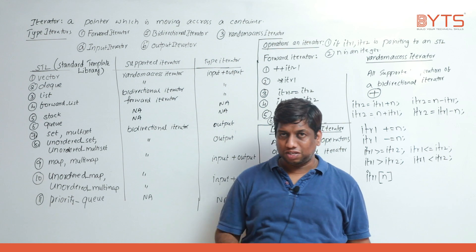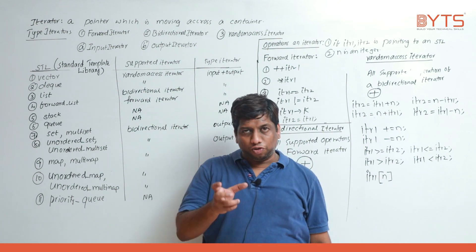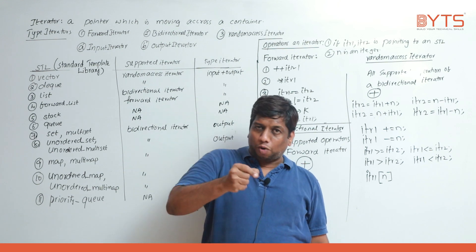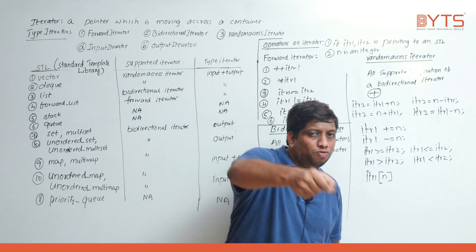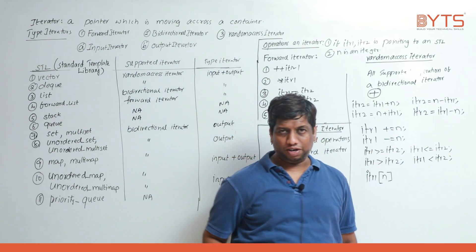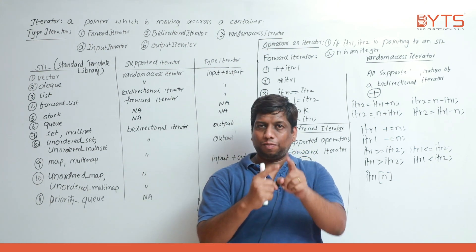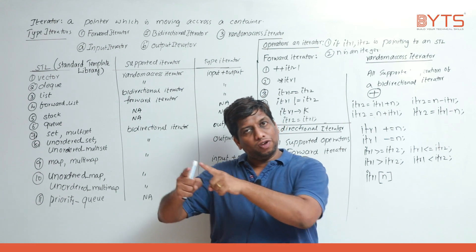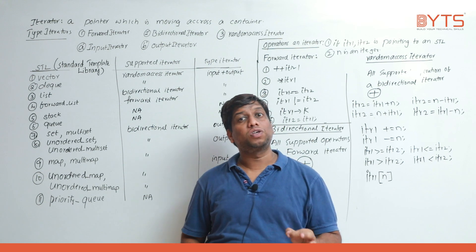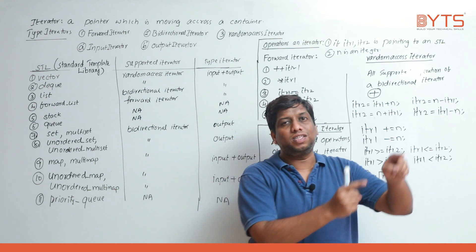Whenever we want to traverse across all elements in a container, we use an iterator. For example, in an array of 20 elements, if we want to insert a new element at the 15th position, the iterator points to that 15th element. Similarly, in a linked list, to delete the 10th element we need to point to it. So whenever we want to traverse, insert, or delete, we use an iterator — a pointer that moves across the container.